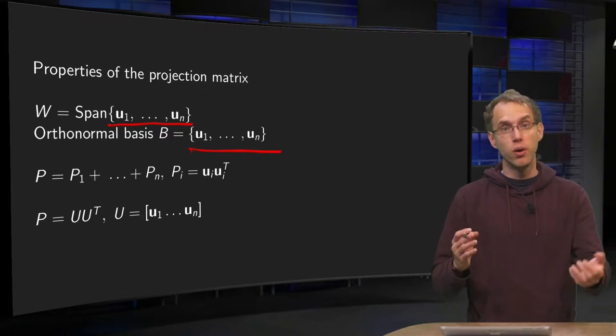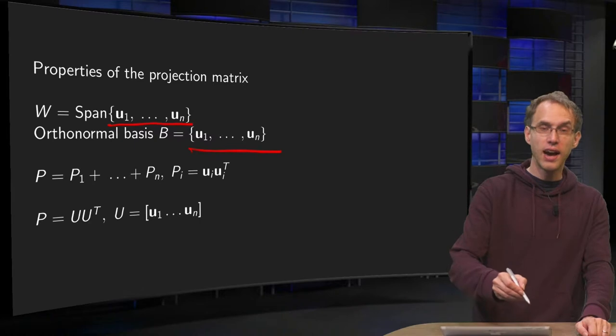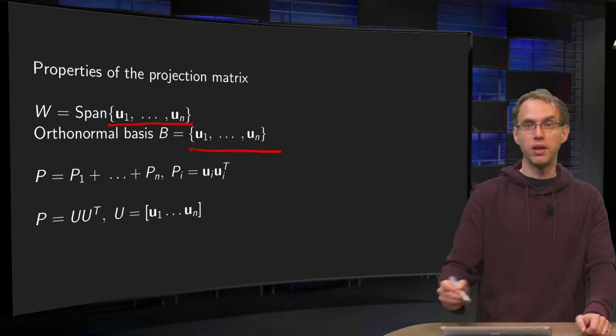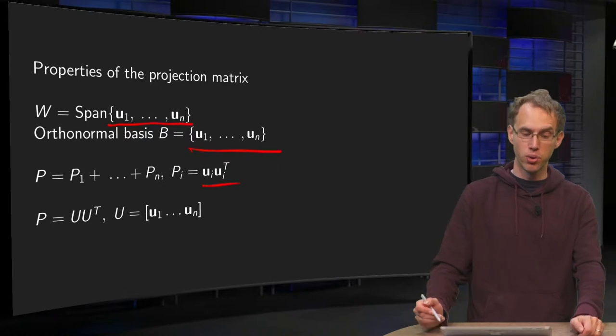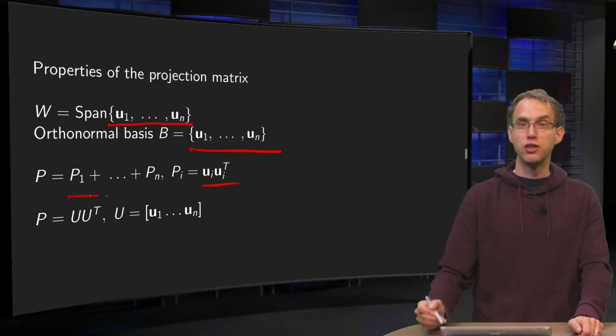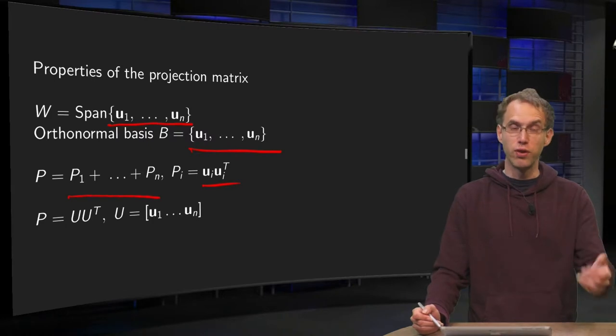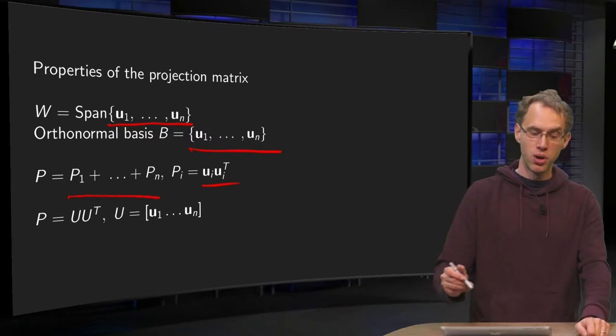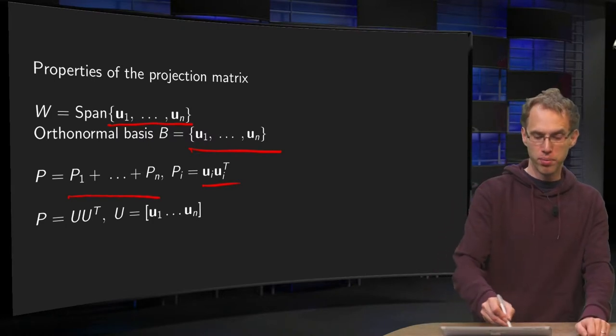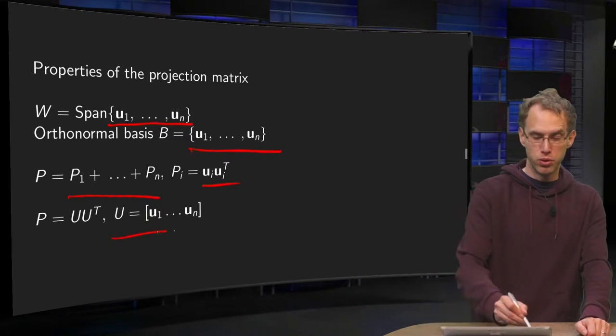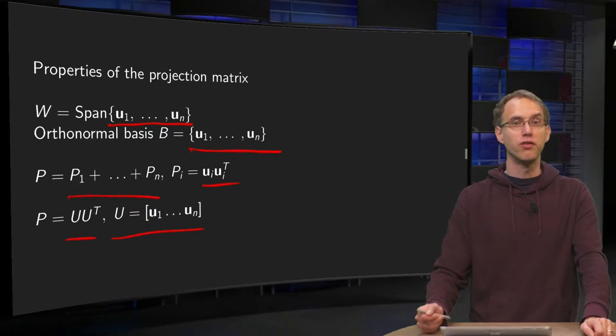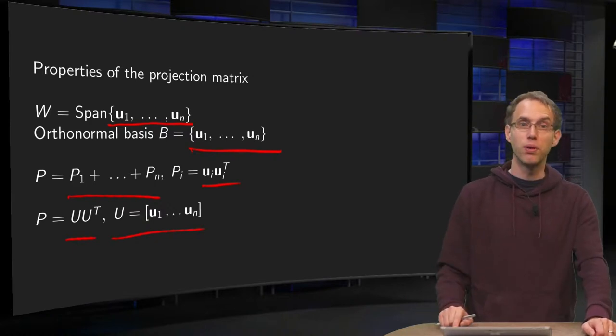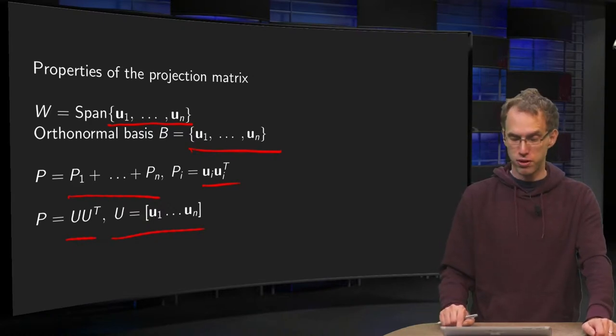Then we have learned how you can find your projection matrix using U1 up to Un as follows. Either you compute U1 times U1 transpose, U2 times U2 transpose, and so on, and add them up as a sum of N matrices—that's one way to find your projection matrix. Or second way: form a matrix U and compute U times U transpose. The second way looks easier, of course, but let's look at an interesting property of the first way first.